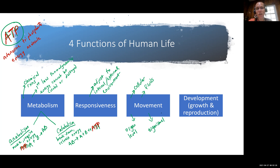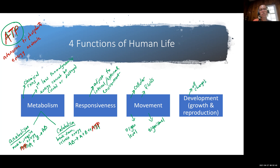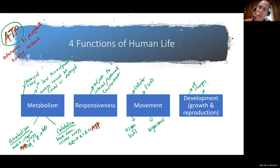The final function is development — and notice in parentheses I've put both growth and reproduction. Development is talking about all of the changes that take place throughout your life, thinking about all the changes that have happened from infancy, toddlerhood, childhood, adolescence, and then through all the stages of adulthood. We also see in this mix the term differentiation, which is basically talking about specialization.